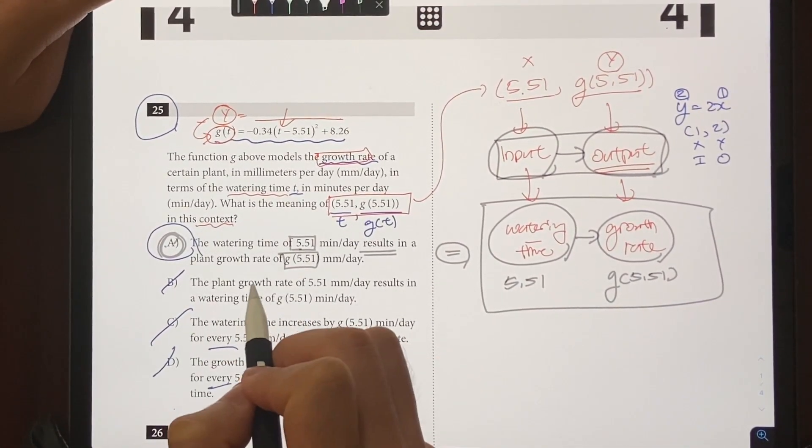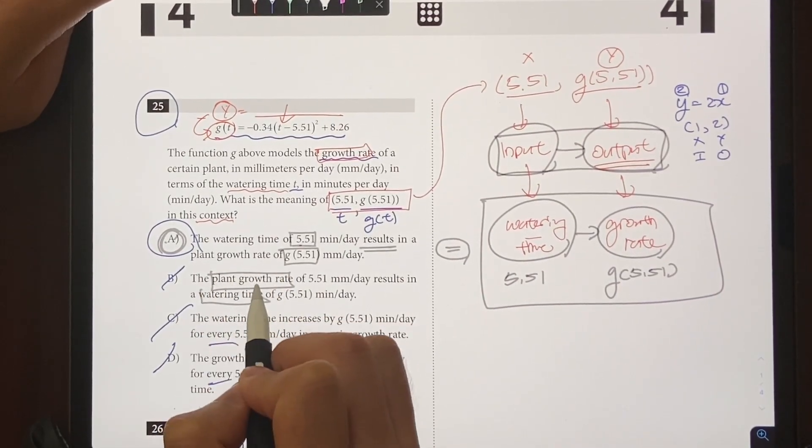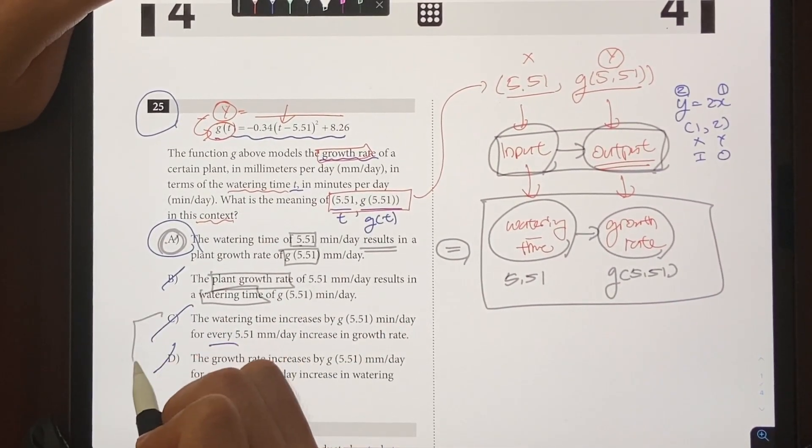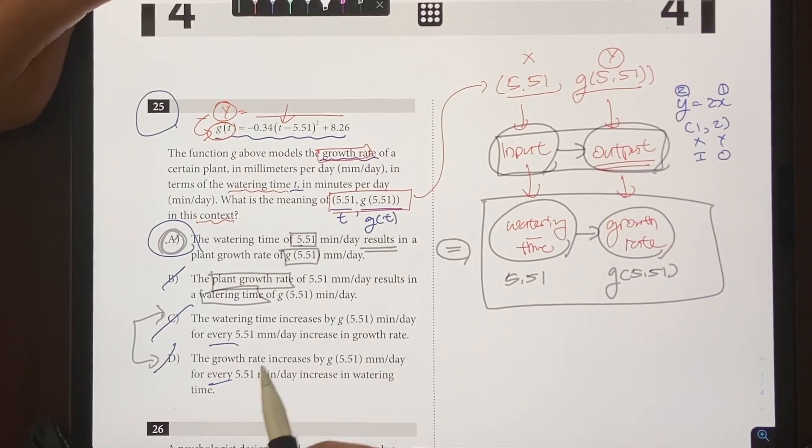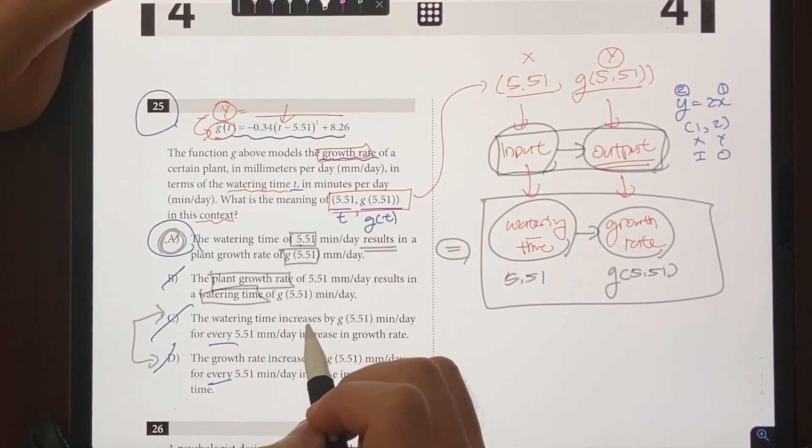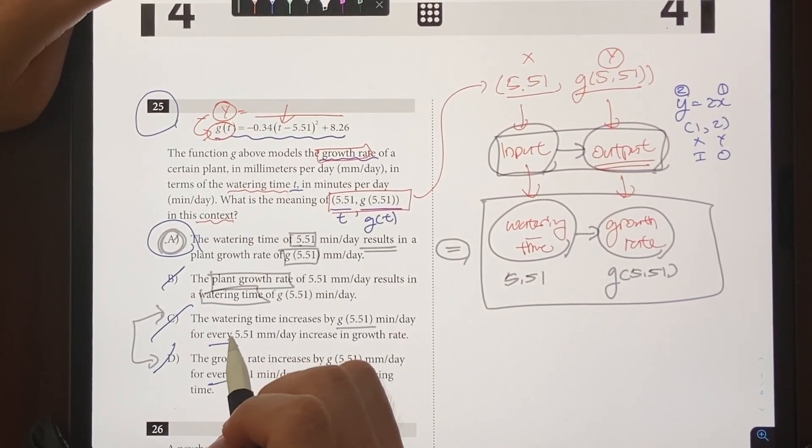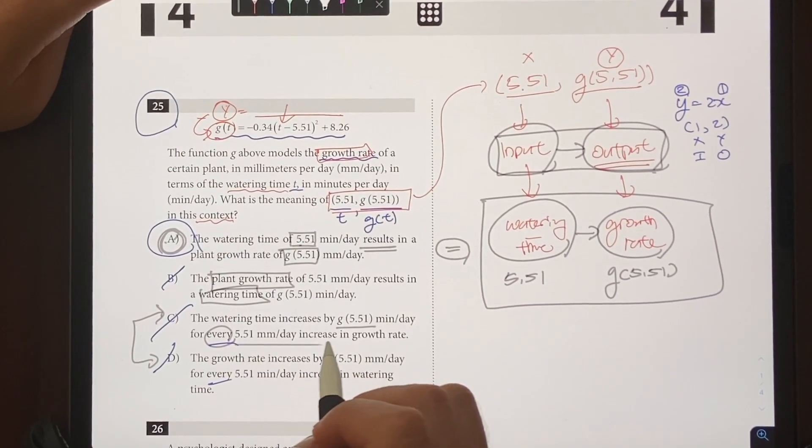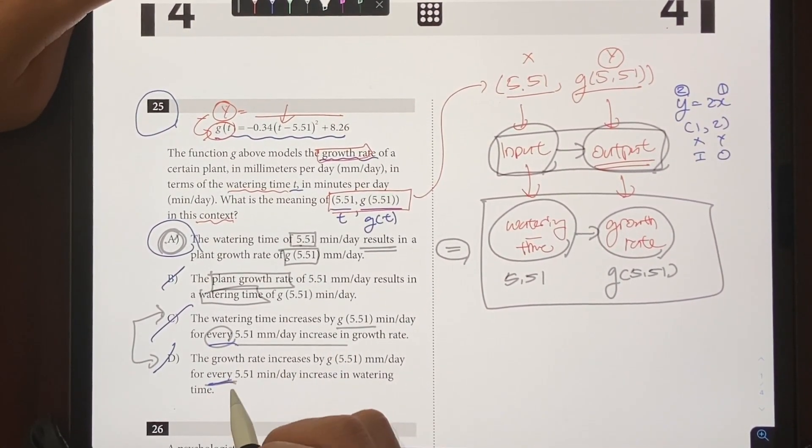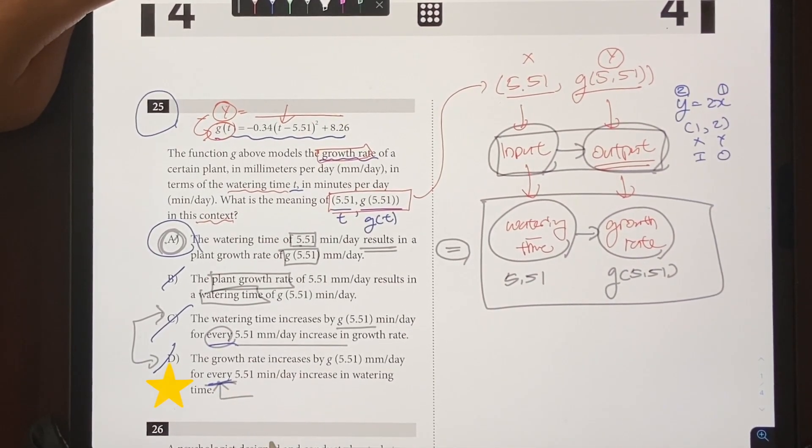And choice B is going to be wrong because the units have been flipped. And when it comes to choice C and D, it's a little bit more nuanced, but let's go over it. Choice C says the watering time increases by this much for every 5.51 millimeters, and choice D essentially says the same thing. And what makes it wrong is the word 'every' right there. 'Every' is referring to a linear relationship.